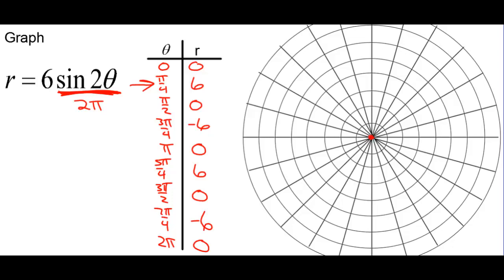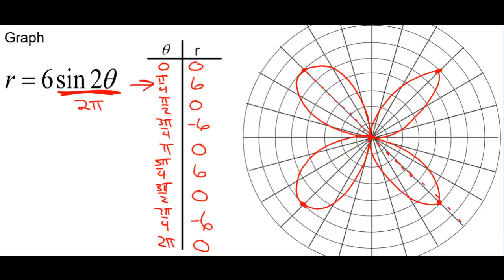So 0 is 0. Pi over 4 is 6, so we're looping around like that. Pi over 2 is back to 0. 3 pi over 4 is negative 6, so 3 pi over 4 is in the opposite direction — 6 right there, so we loop around to that one. Pi is back to 0, so there we have half the graph done — there's two of the petals, we need two more. 5 pi over 4 is 6, so it loops around to this one. 3 pi over 2 is 0. And now we just have to finish one more petal: 7 pi over 4 is negative 6, so that loops around. And then finally 2 pi is back to 0, so it finishes in 2 pi.